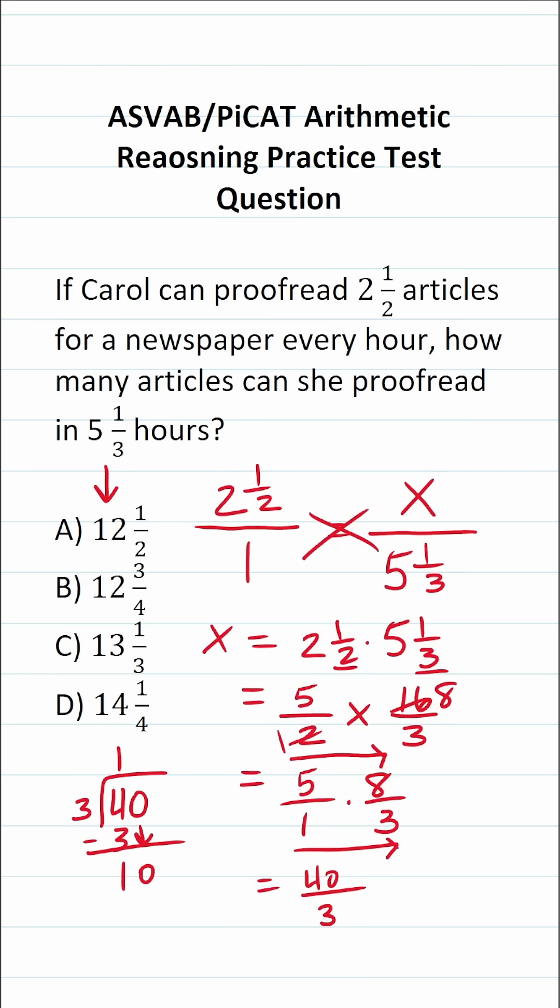How many times does three go into 10 without going over? That's going to be three times. Three times three is nine. 10 minus nine is one. And right here, we have enough information to write our mixed number. This 13 is going to be our whole number. This remainder of one is going to be our numerator. And this divisor of three is going to be our denominator.